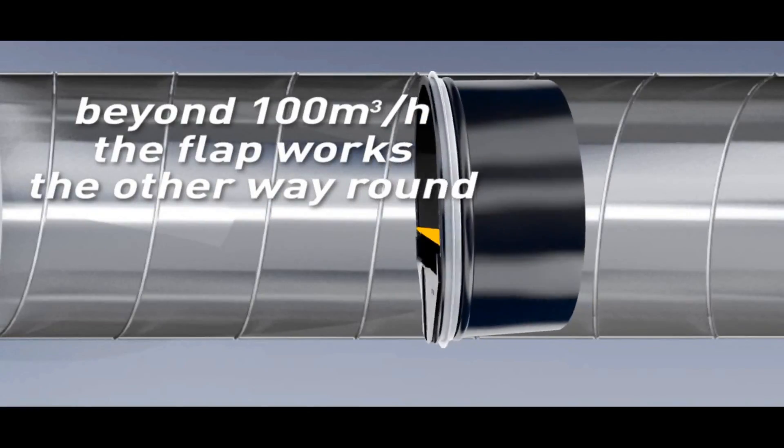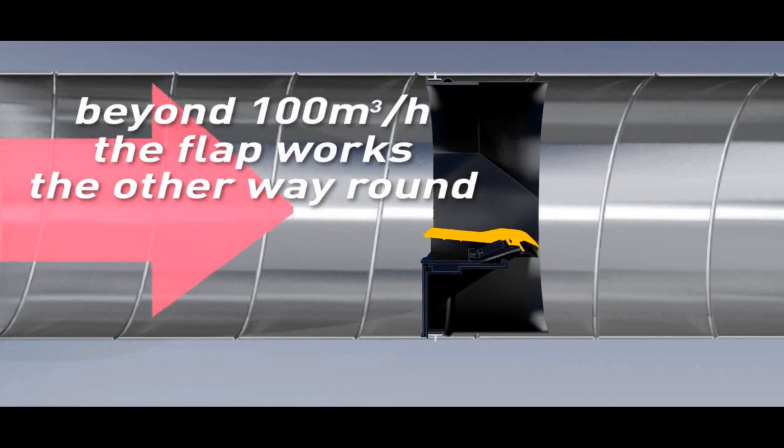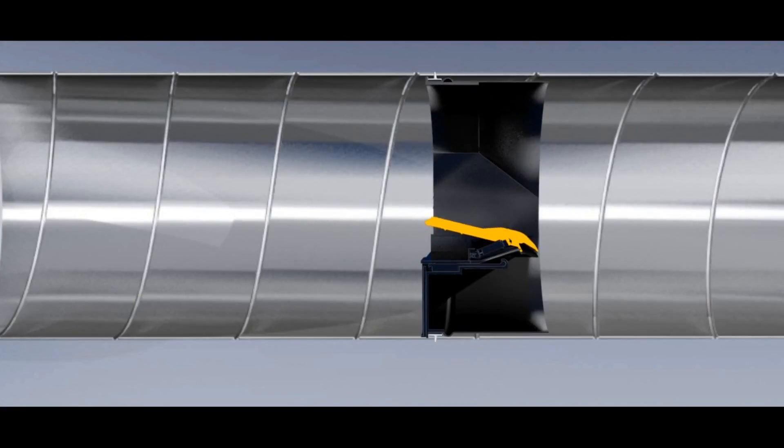For flow rates superior to 100 cubic meter per hour, the flap works the other way round. The front of the flap rises to regulate the air flow rate according to the pressure.